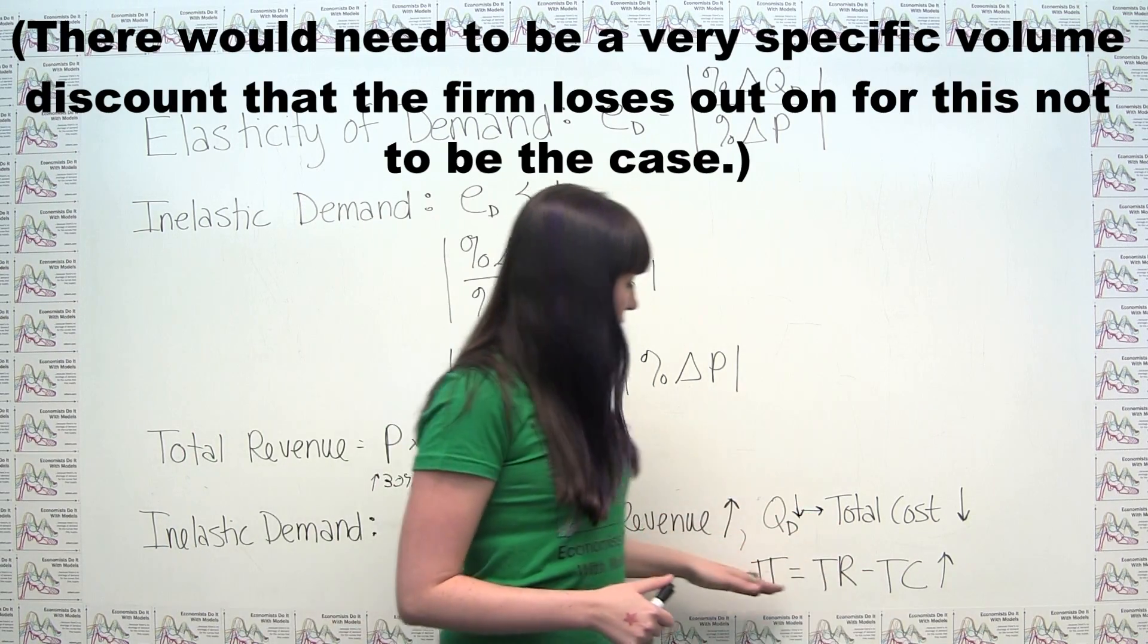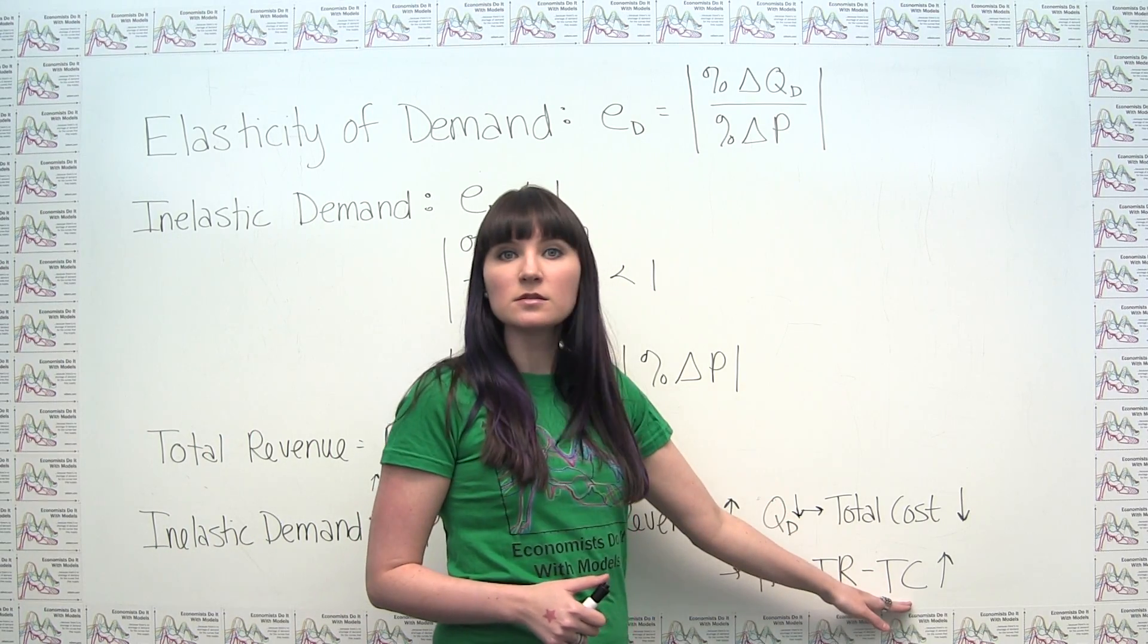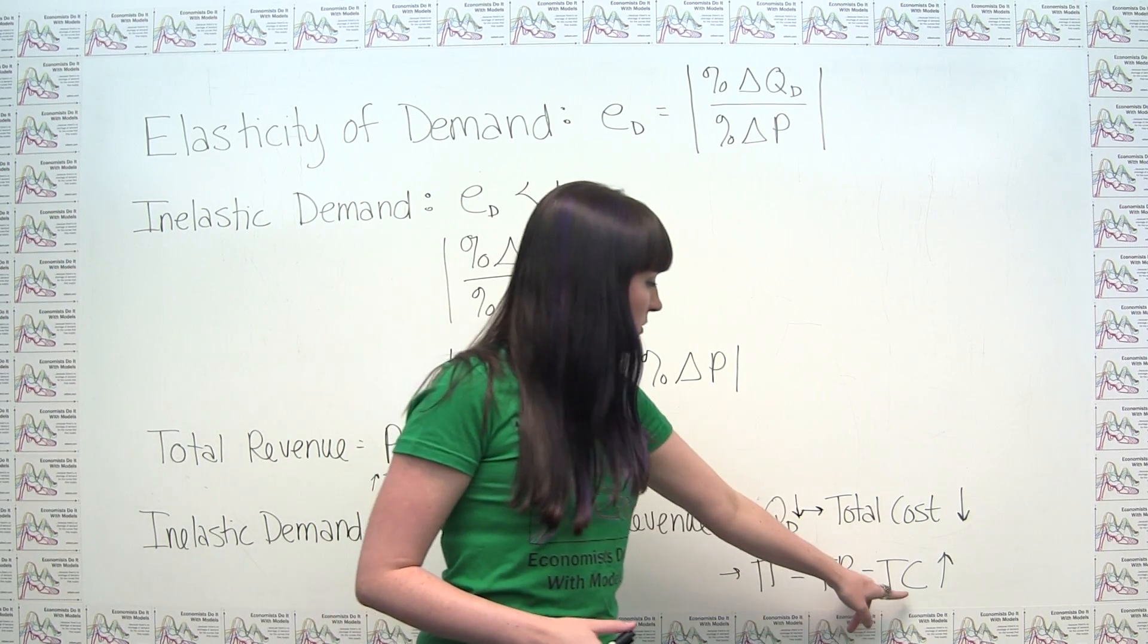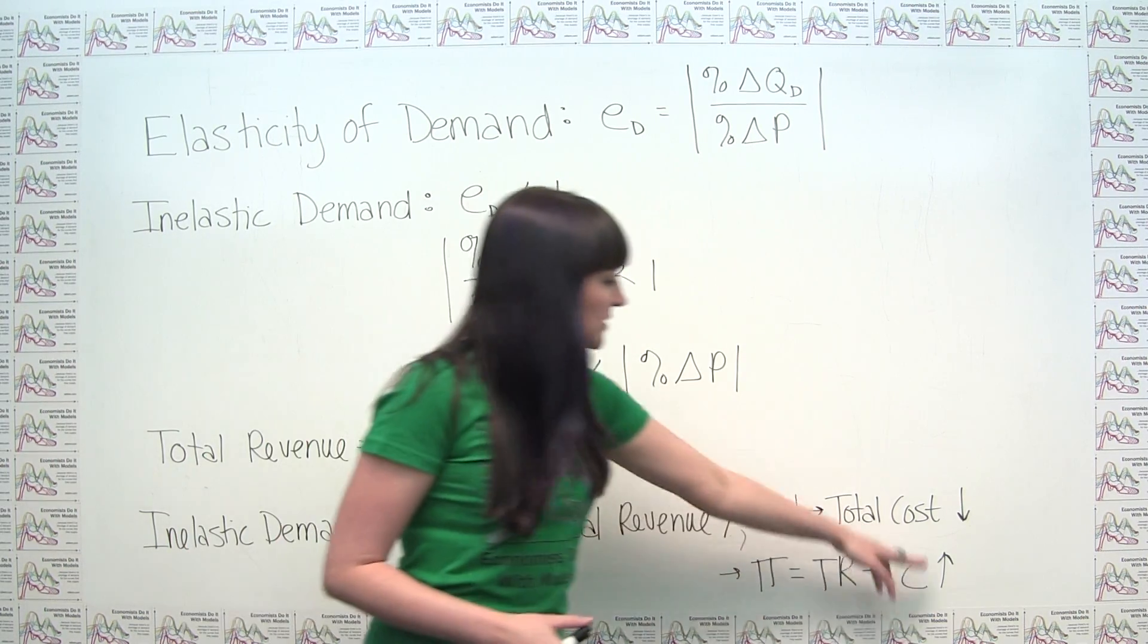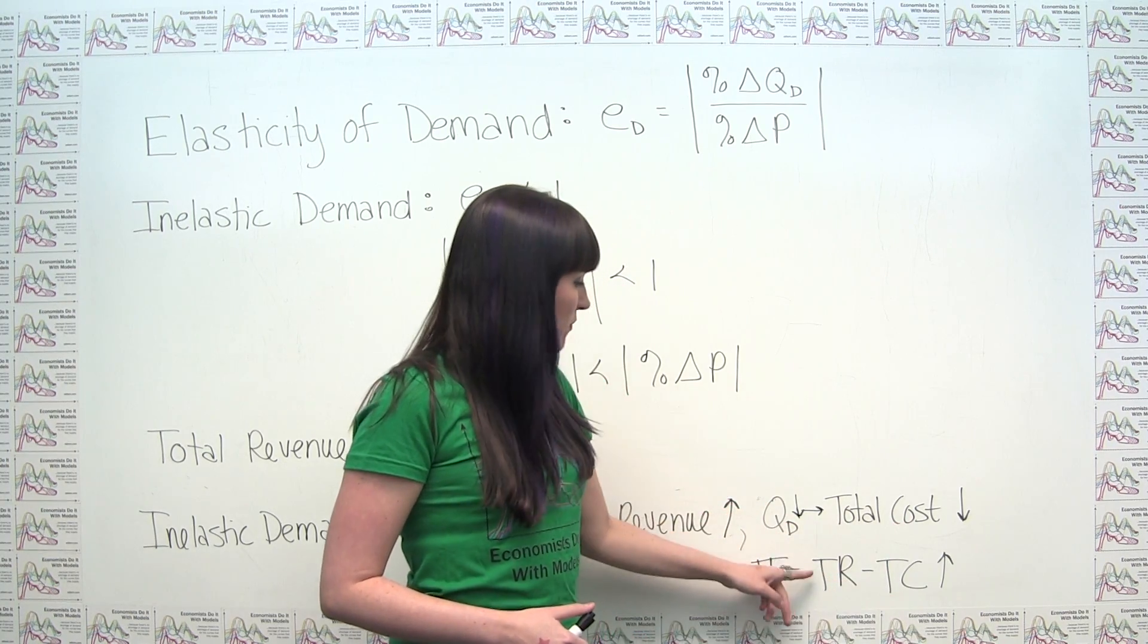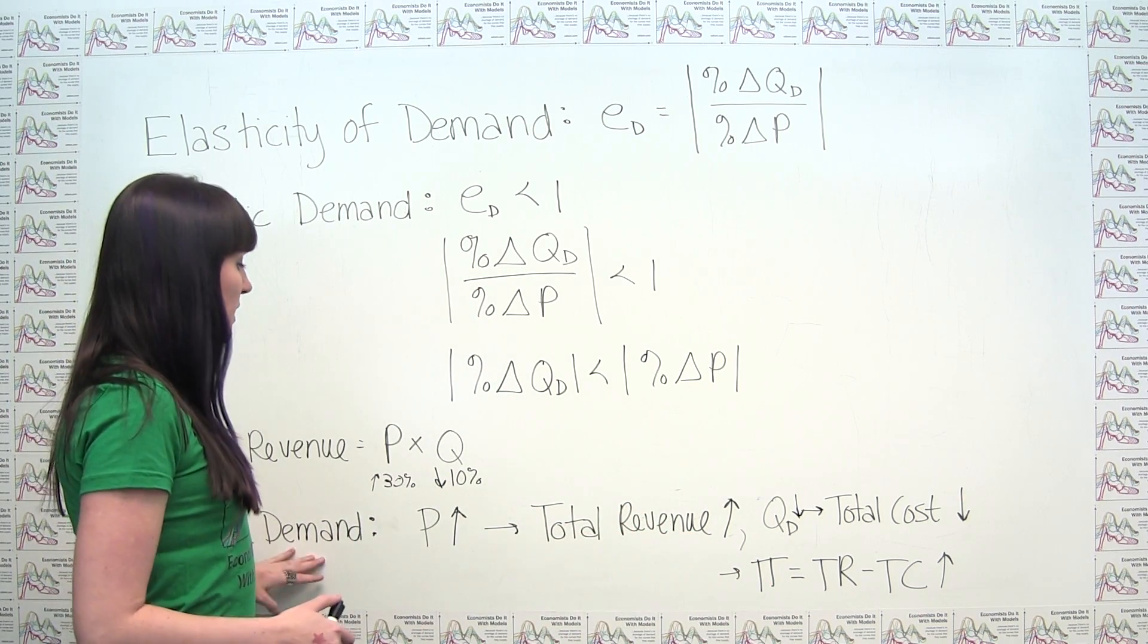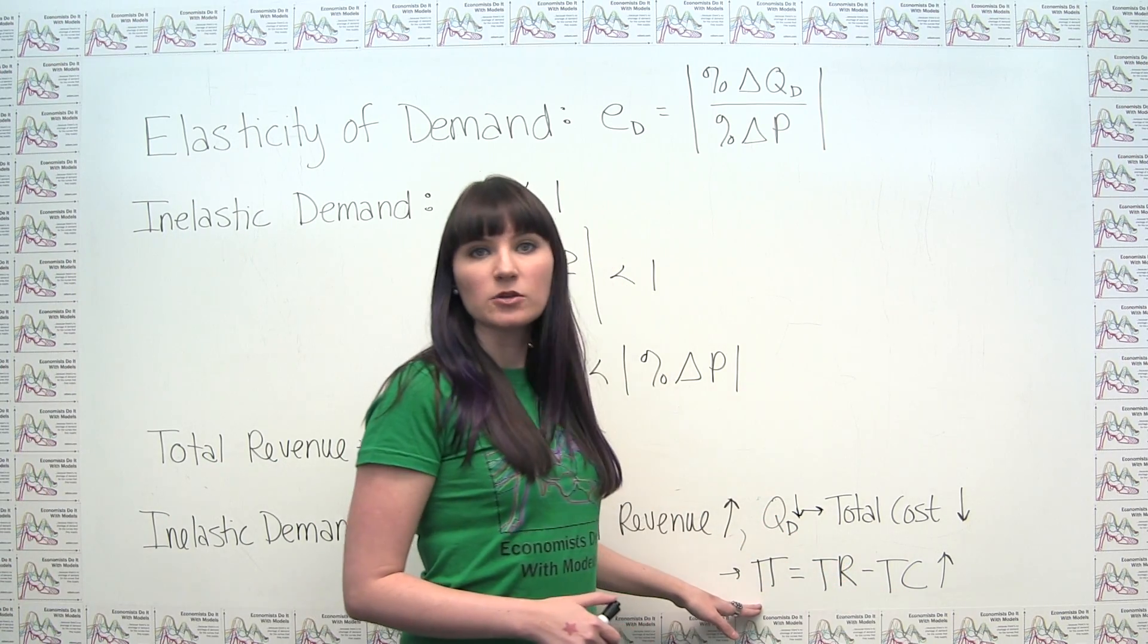So then if we think about profit, we say that profit is just equal to total revenue minus total cost. And we said with our price increase, our total revenue increased and our total cost decreased. So what we're actually doing is we're subtracting off a smaller number than we were before and we're adding a bigger number than we were before. So by definition, when we're facing inelastic demand, this price increase has to lead to an increase in profit.